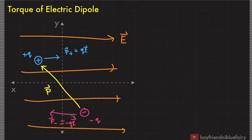These two forces here tend to rotate the electric dipole in such a way that the electric dipole moment P moves in the same direction as that of the electric field.